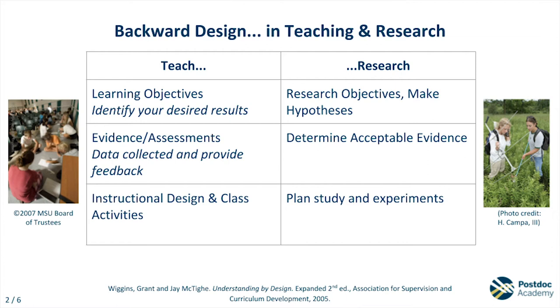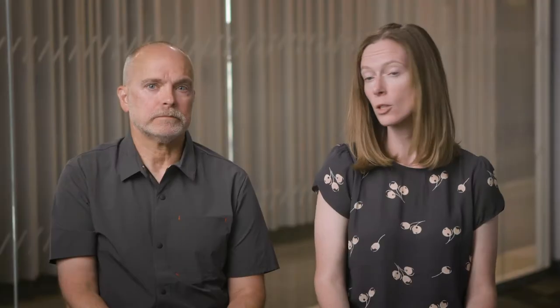Second, they decide on what types of evidence or data they'll need to know if they've met their objectives — what kinds of data do I need to collect in the field or laboratory? Lastly, how can we design the study to collect these types of data? To me, Sarah, working backwards can be used for tackling many types of problems. This approach is often referred to as backward design, defined by Wiggins and McTea. So let's go through a couple of examples.